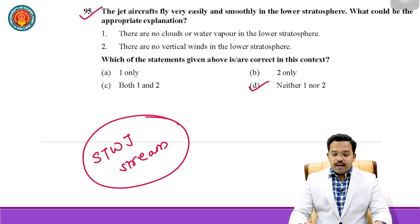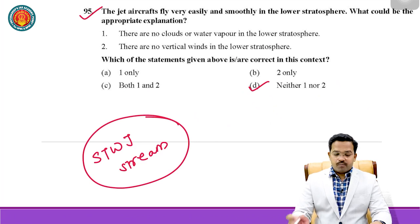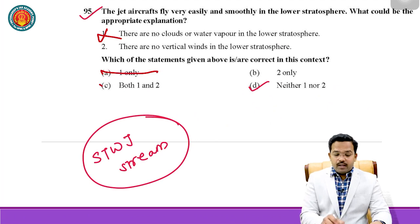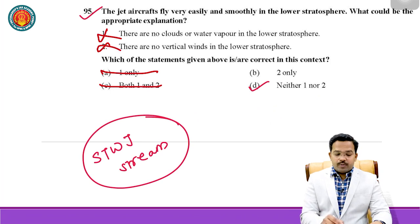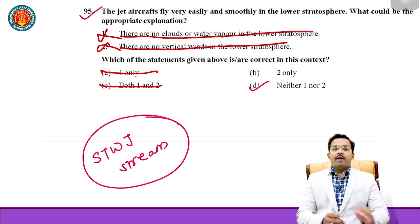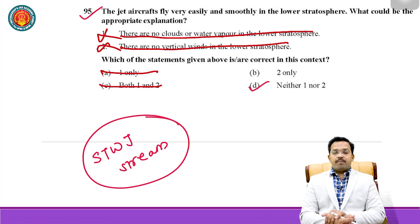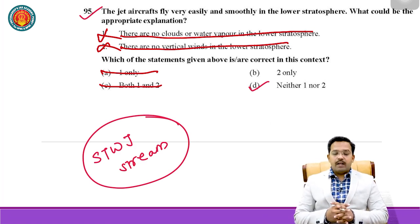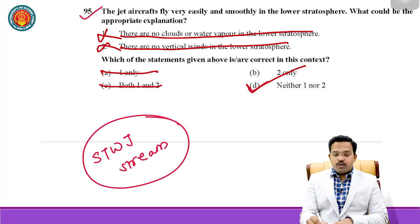Question number 95: Jet aircraft fly very easily and smoothly in the lower stratosphere. The most important reason is subtropical westerly jet streams. The other statements — that there are no clouds or water vapor in the lower stratosphere, and that there are no vertical winds in the lower stratosphere — are both wrong. Even if you don't know about the subtropical westerly jet stream, both alternative statements are clearly incorrect, so the answer is neither one nor two.